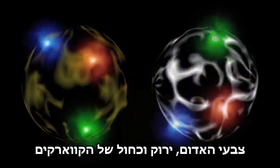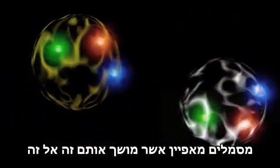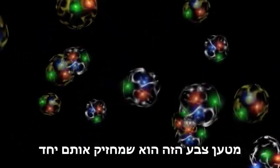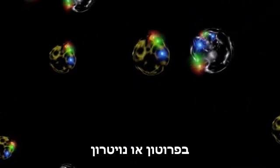The red, green and blue colors of the quarks represent a property that attracts them to one another. It is this color charged property of the quarks that hold them together in a proton or a neutron.